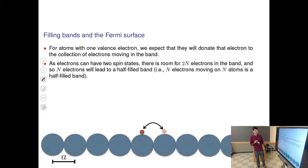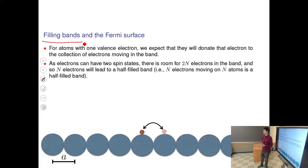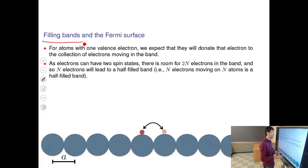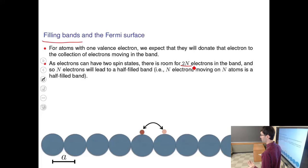Now an extremely important concept: including all electrons and putting them into the band. Talking about filling the bands leads to the concepts of insulator, conductor, and semiconductor. These are fermions, so we fill from the bottom like filling a bucket, and importantly per k-point there are two allowed states — spin up and spin down — so everything is multiplied by two.